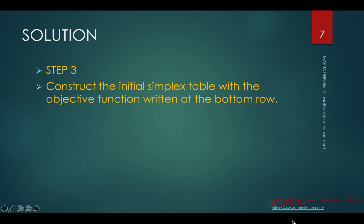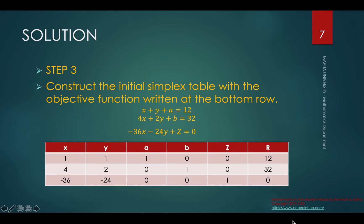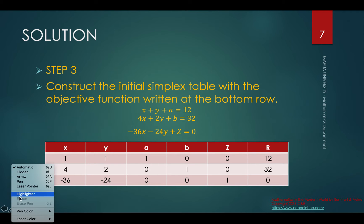We construct the initial simplex table with the objective function written at the bottom row. The first equation, second equation, and the objective function make up the three rows. We have two variables, x and y, then the slack variables a and b, and then the objective function z — five variables in total. This is how we set up the simplex table.